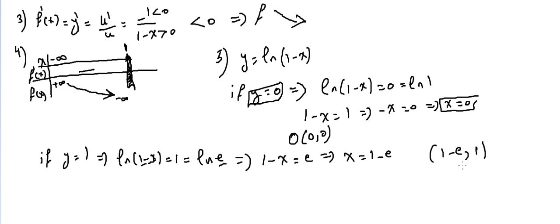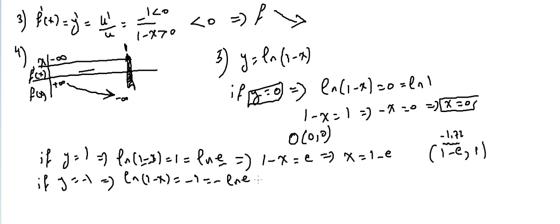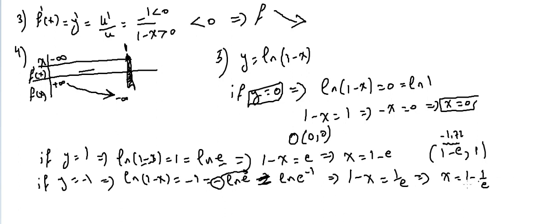Since e ≈ 2.718, we get x ≈ 1 - 2.72 ≈ -1.72. If y = -1, then ln(1 - x) = -1 = -ln(e) = ln(e⁻¹), so 1 - x = e⁻¹ = 1/e, giving x = 1 - 1/e. Another point with abscissa 1 - 1/e and ordinate -1, approximately 0.63 something.